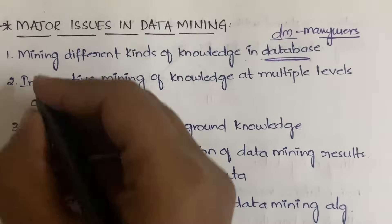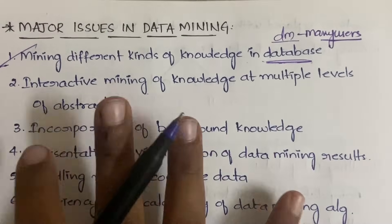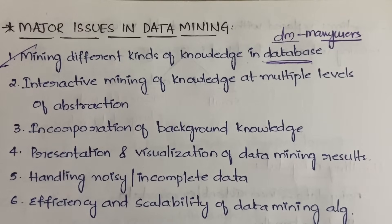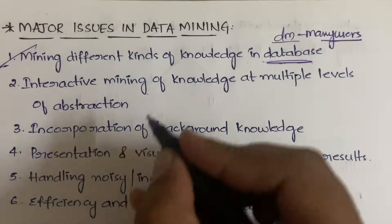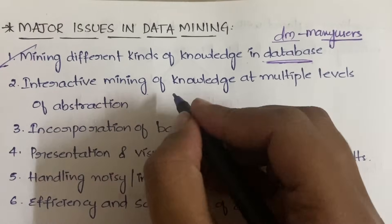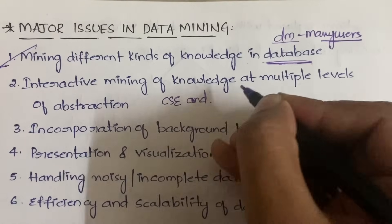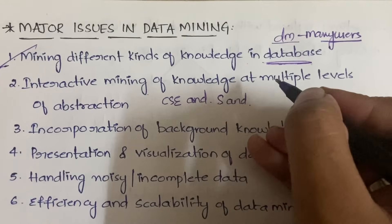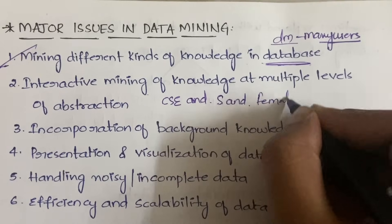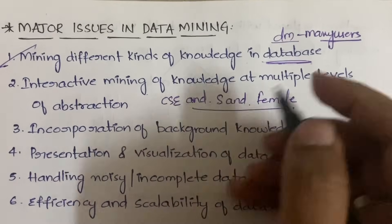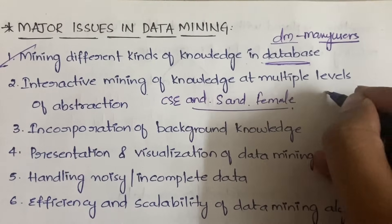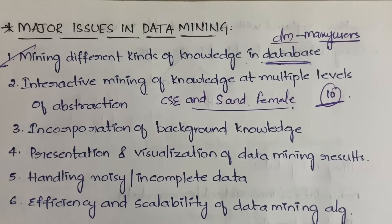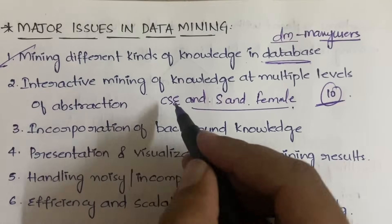The second issue is interactive mining of knowledge at multiple levels of abstraction. Interactive means, when you are mining data, suppose you want to get the roll numbers of all students who belong to CSC, whose name starts with S, and whose gender is female. You also have a constraint that you can select only up to 10 members.